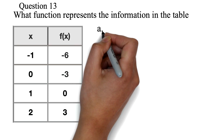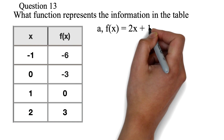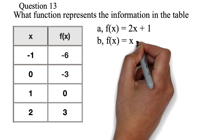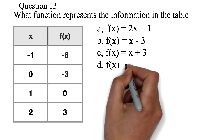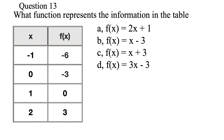Question 13: What function represents the information in the table? Options: a. f(x) equals 2x plus 1. b. f(x) equals x minus 3. c. f(x) equals x plus 3. d. f(x) equals 3x minus 3. The best way is to solve from the answers — input the x values into each function and see if you get the correct f(x) values. Since it's easy to work with 0, try that first to narrow the possible answers.